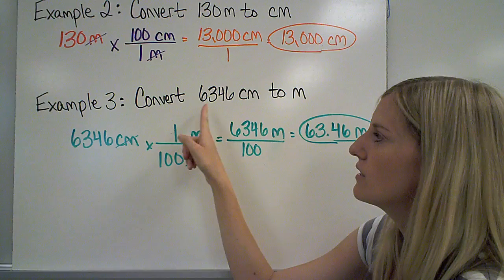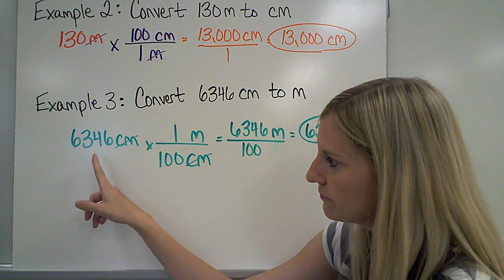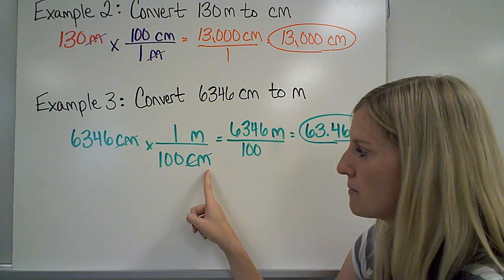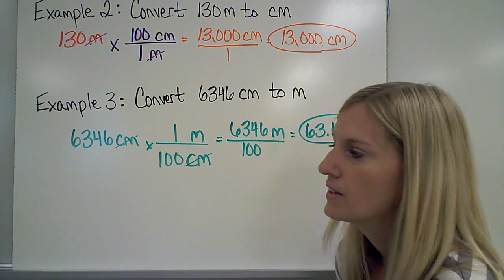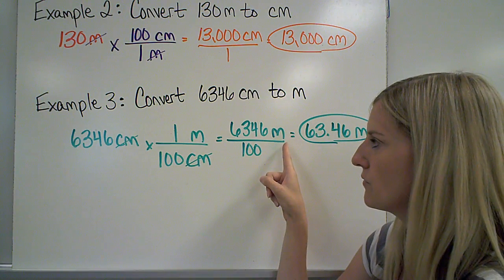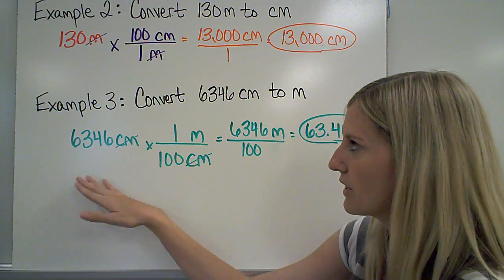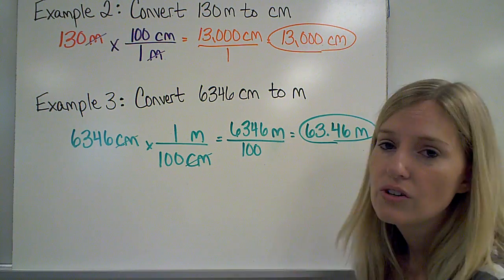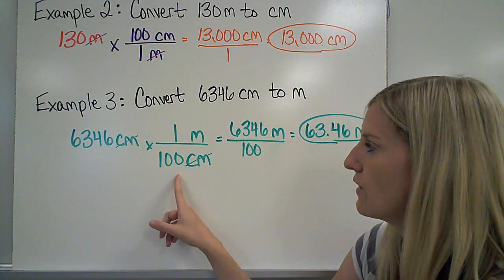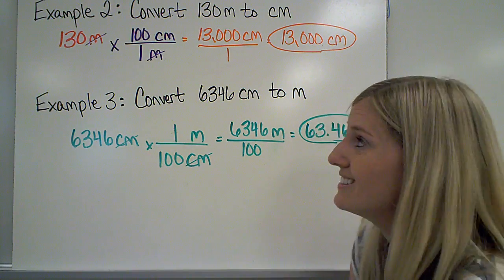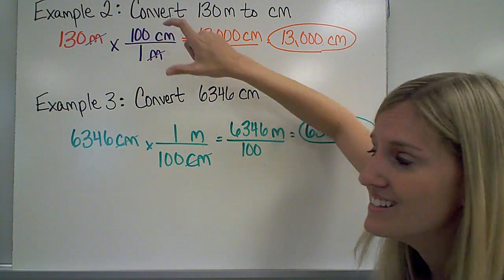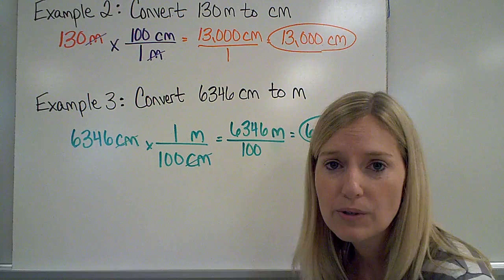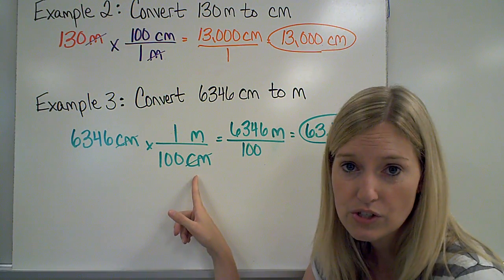Example 3: convert 6,346 centimeters to meters. I rewrote my original measurement and multiplied it by a conversion factor. I made sure centimeters were on the bottom so they would cancel, and meters is on the top. 6,346 times 1 is 6,346, divided by 100, gives me 63.46 meters. Notice that in both examples the conversion factor relates centimeters to meters — in one case it's 100 centimeters over 1 meter, and in the other it's 1 meter over 100 centimeters. Whatever type of problem you have will dictate which conversion factor you'll need to use.